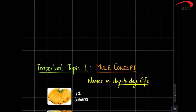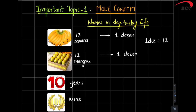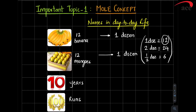We go to the first part — mole concept. When you talk about mole concept, you need to understand the term mole. When somebody says 12 bananas, what immediately comes to our mind? One dozen. 12 mangoes — we use the word one dozen because we know a dozen stands for 12. Somebody says 2 dozen, we know it stands for 24. Half a dozen stands for 6. So for the quantity 12, we have given the name dozen.